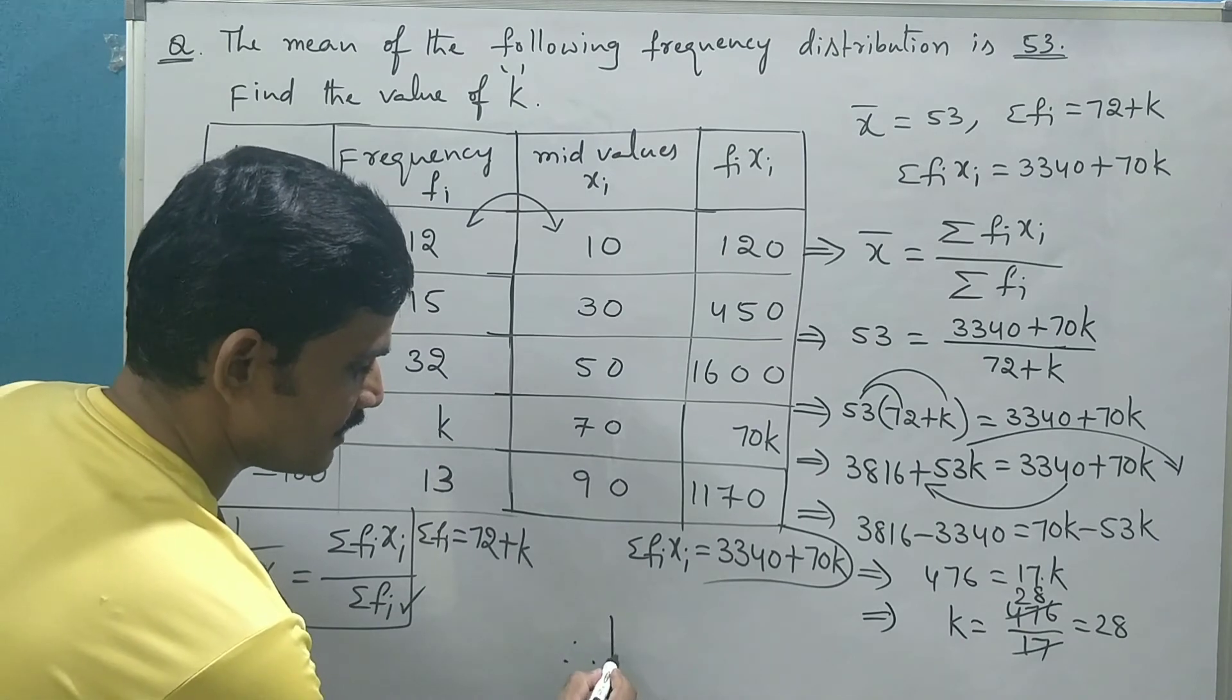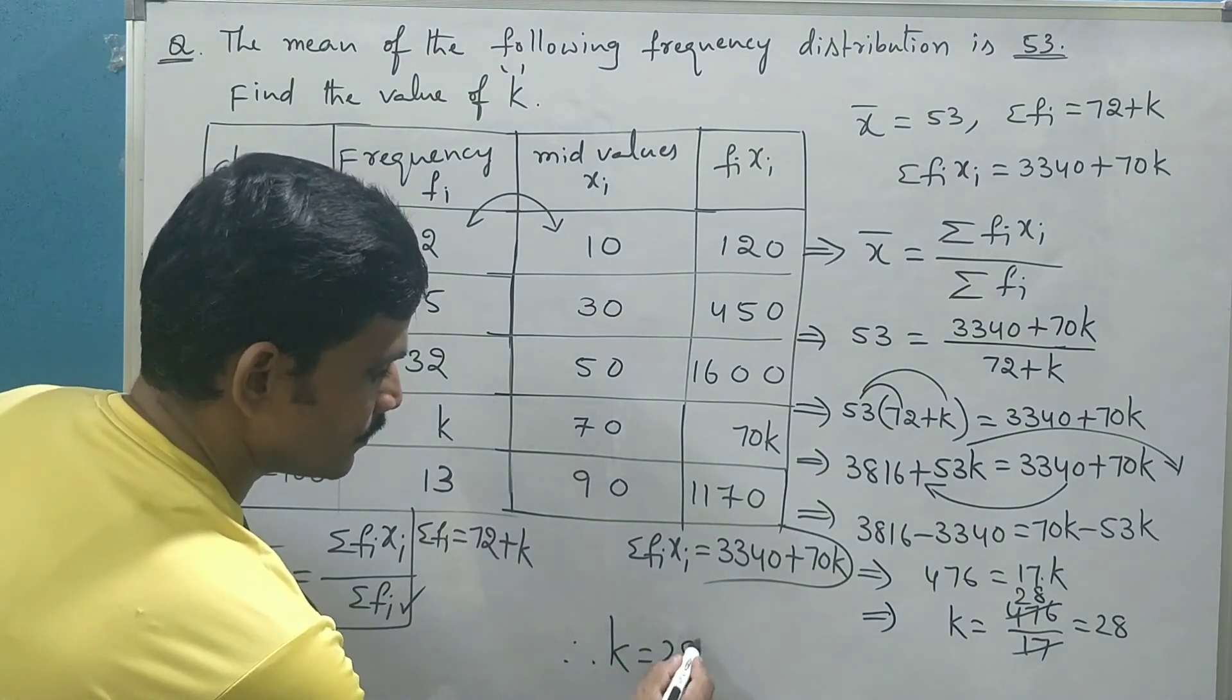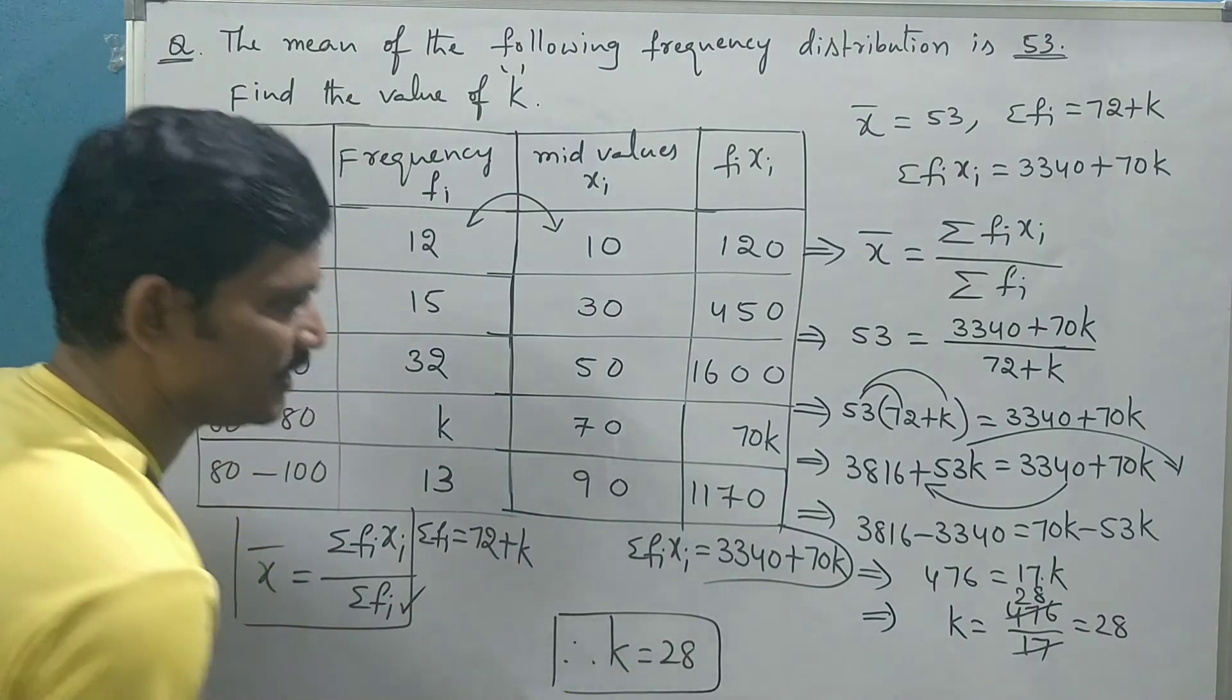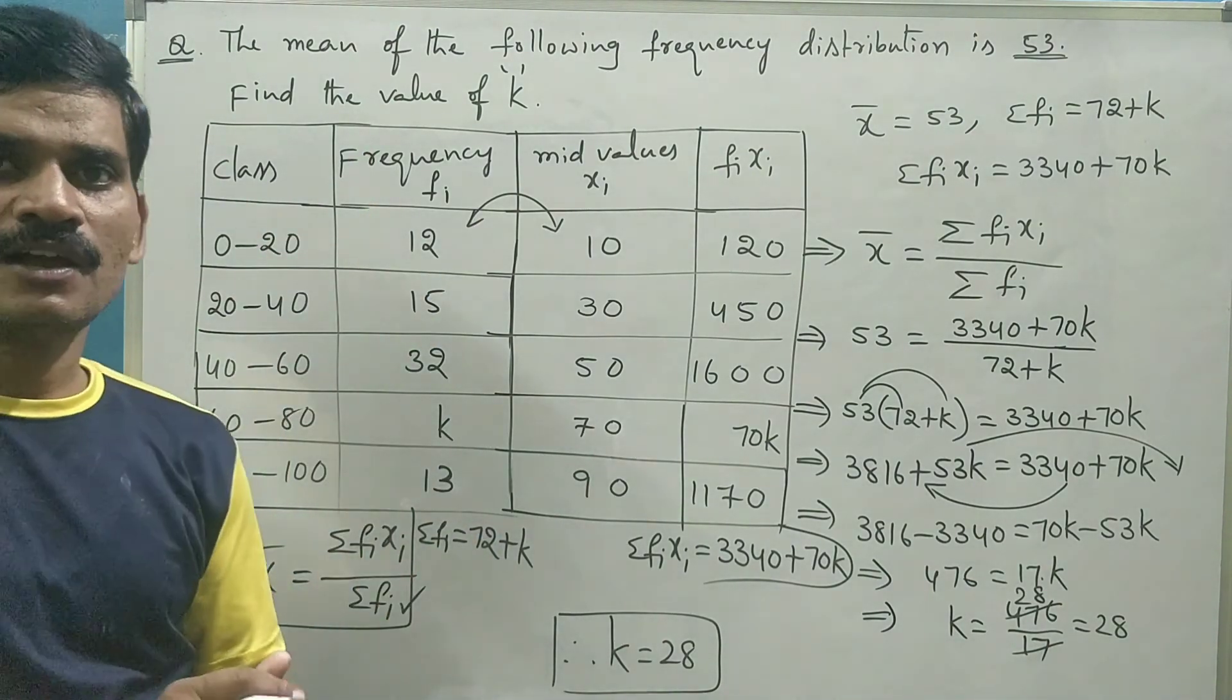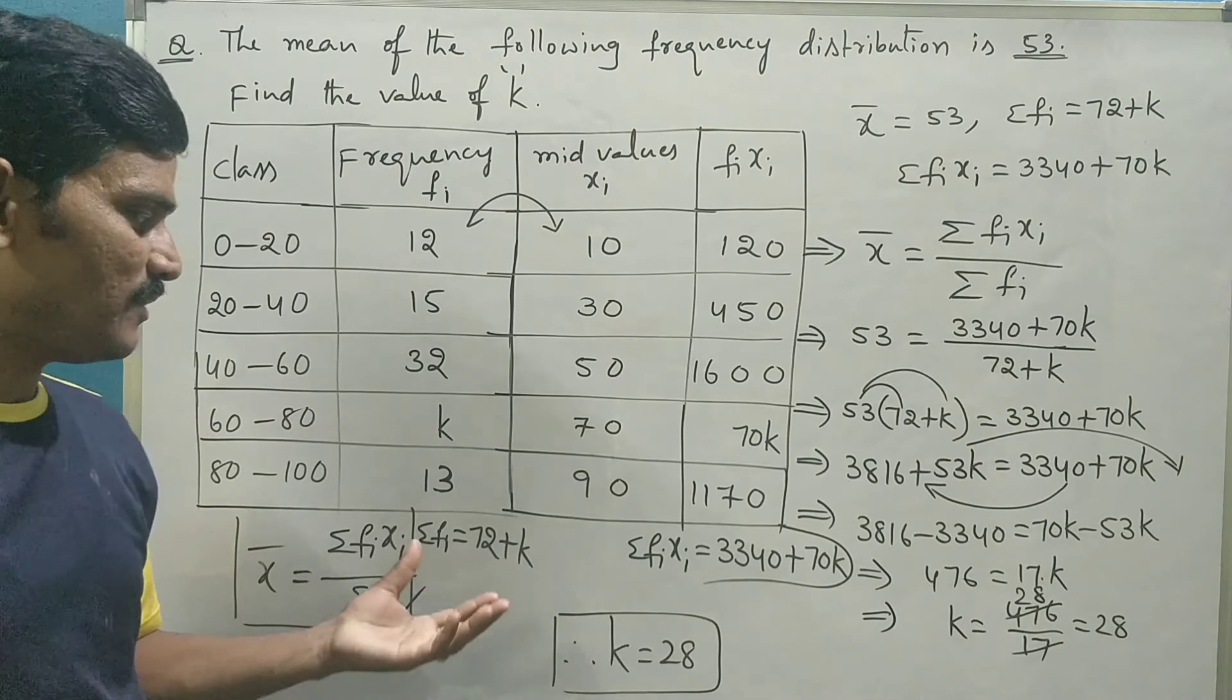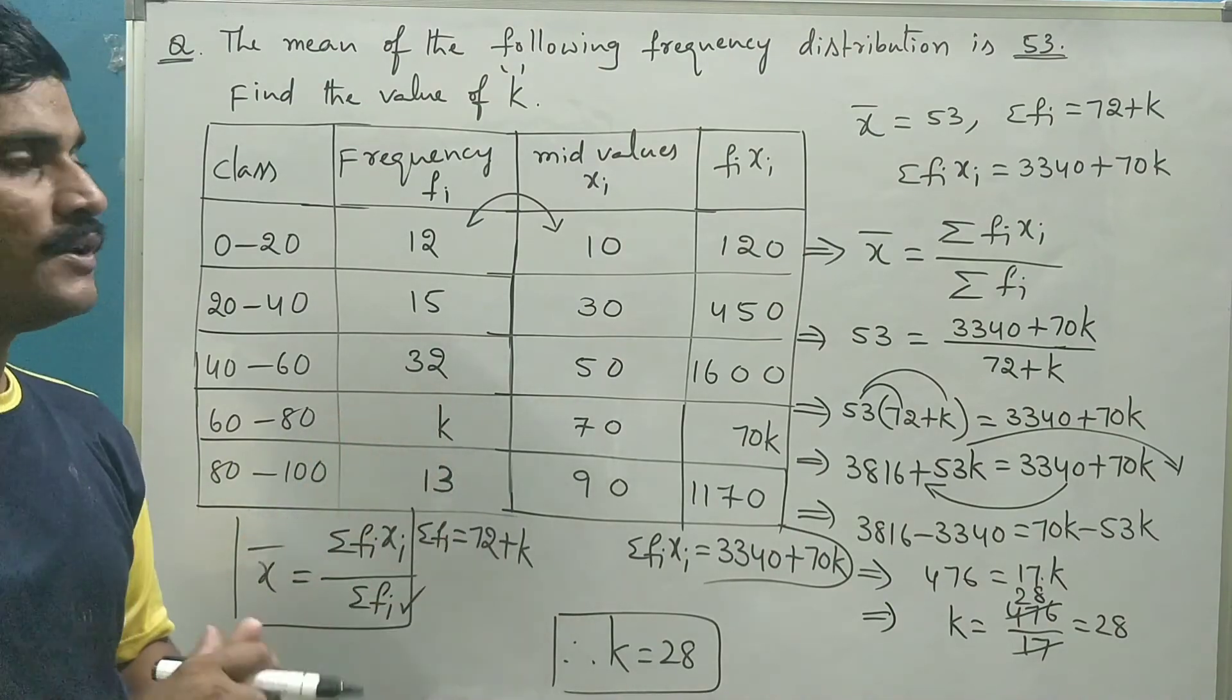Therefore, final conclusion is k is equal to 28. So this is the missing frequency in the table. So this is how you can find missing frequency of the frequency distribution.